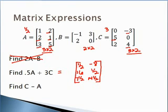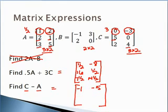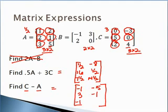The last expression is C minus A. Since C and A have the same dimensions, we can subtract element by element to get another 3 by 2 matrix. First row: zero minus one is negative one; negative three minus two is negative five. Second row: five minus two is three; zero minus one is negative one. Third row: two minus three is negative one; four minus five is negative one.